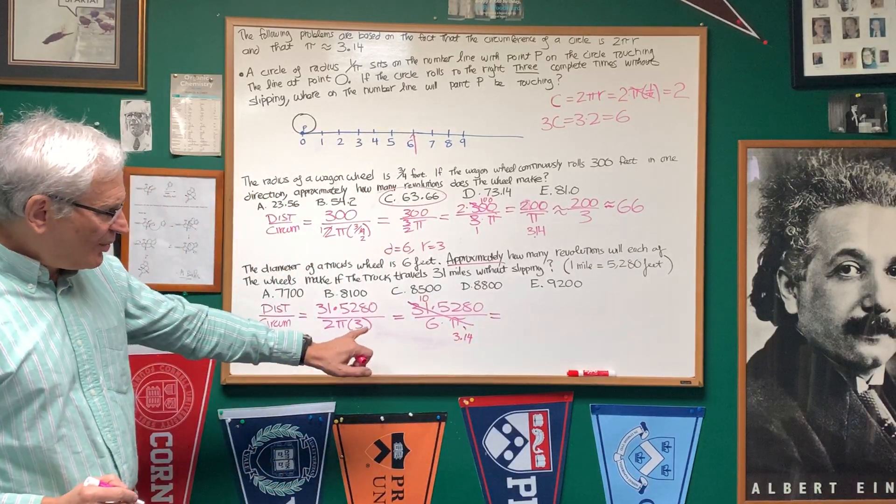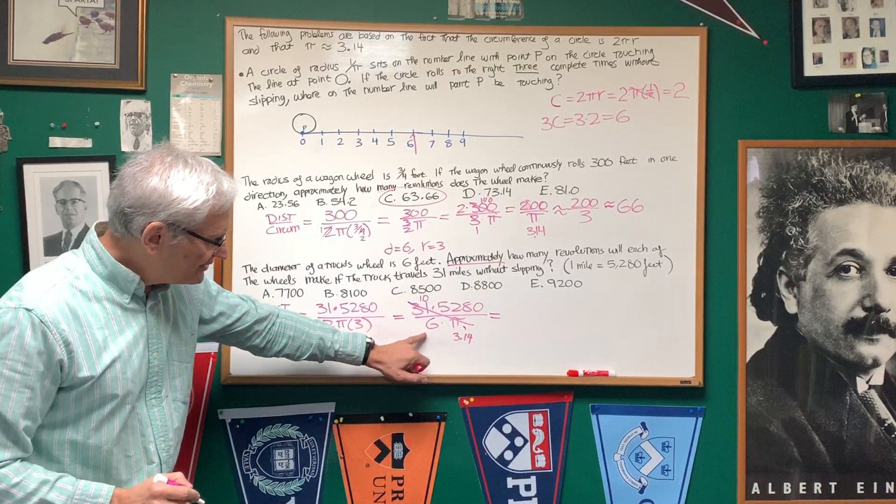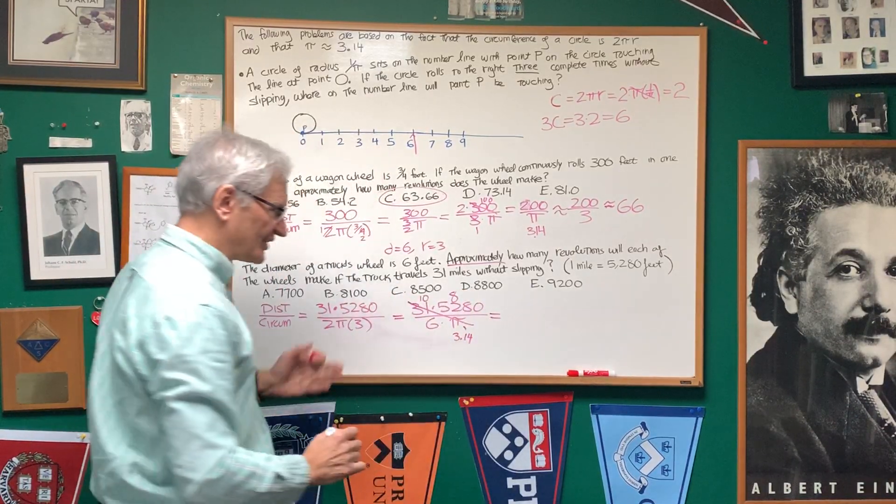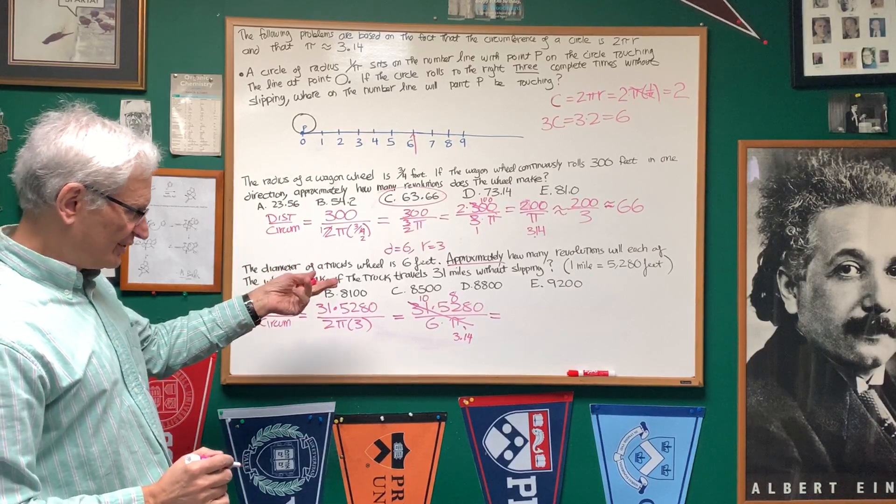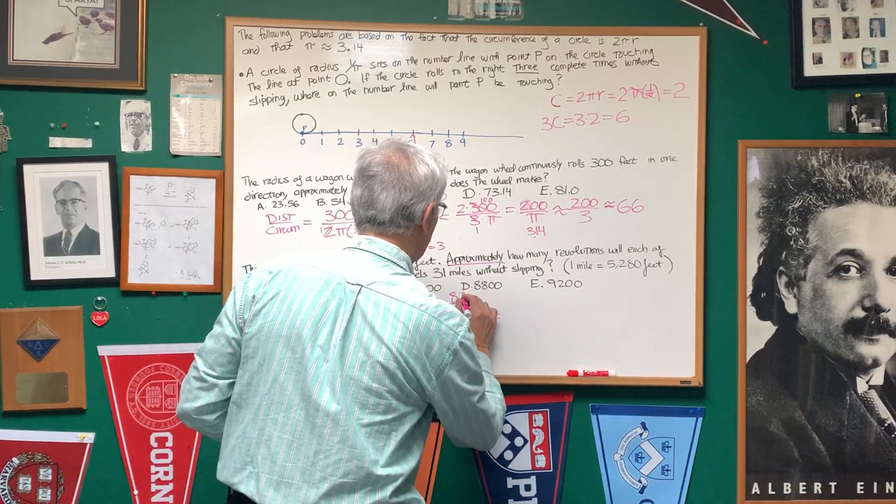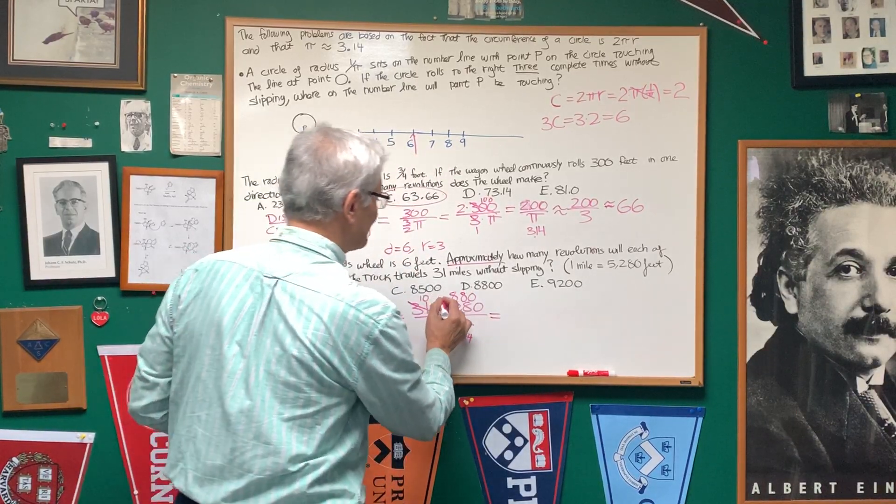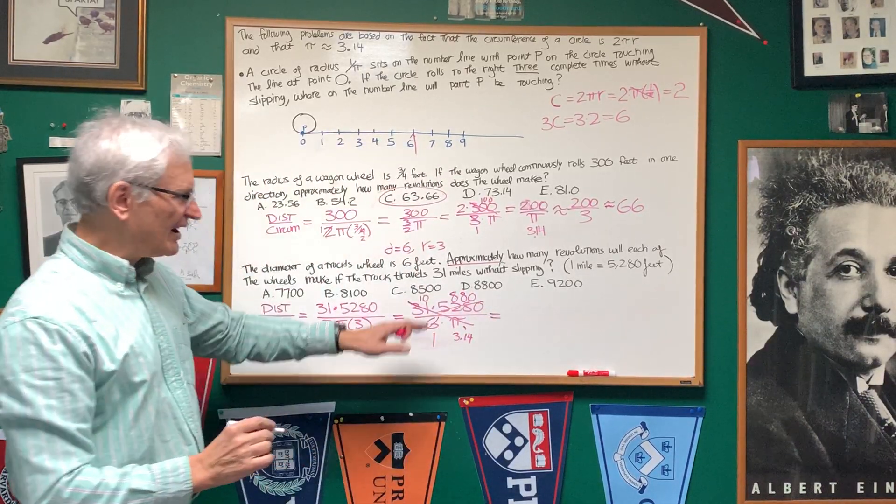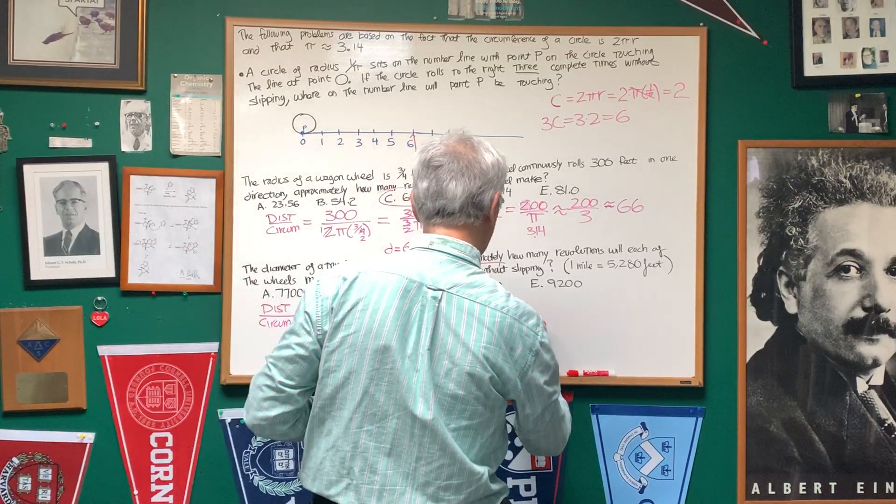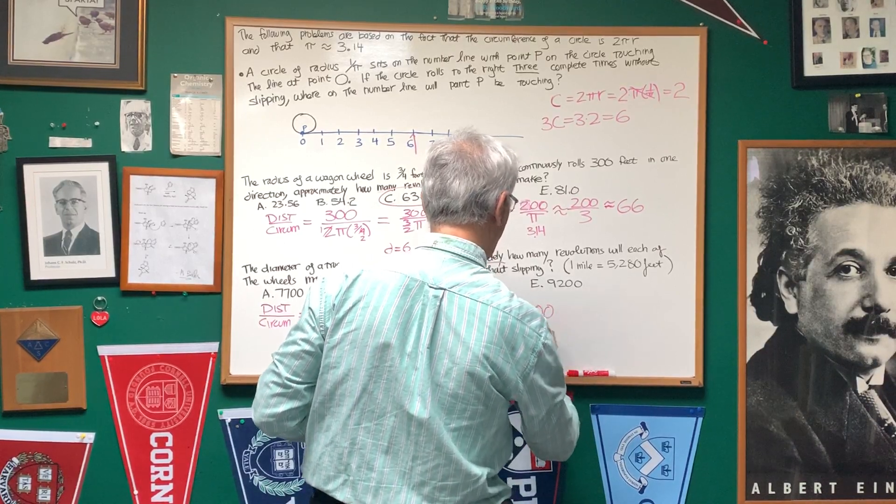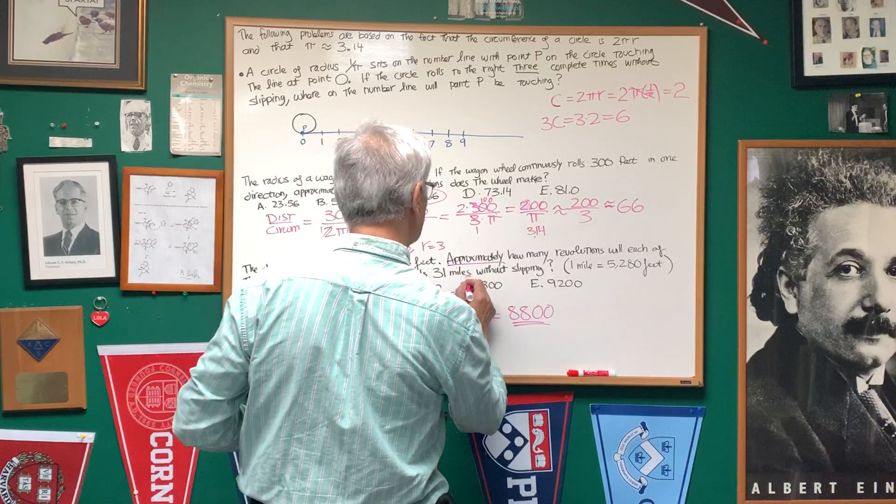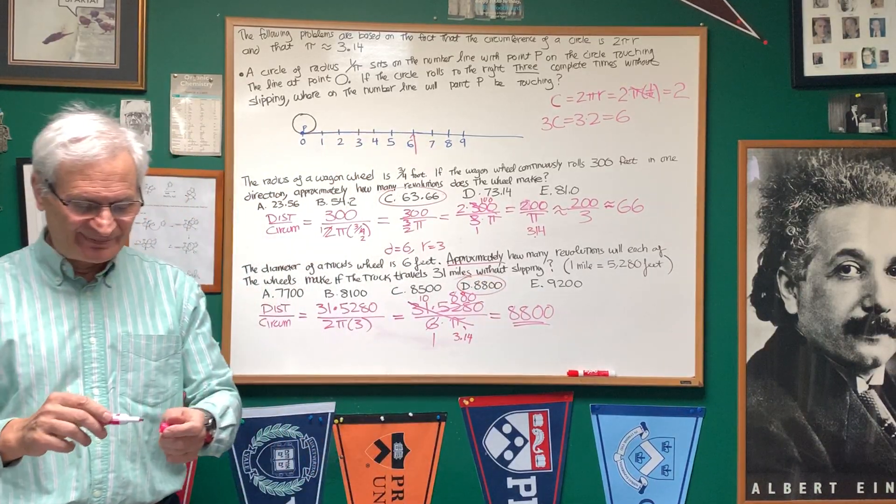Now what do I have here? Let's divide 6 into 5,280. 6 goes into 52, 8 times, 6, 8 to 48 with 4 left over. 6, 8 to 48 just becomes 880. So 6 goes into 5,280, 880 times. 10 times 880 is 8,800. And that's how many times that truck wheel turns. And we can see the correct choice is choice D.